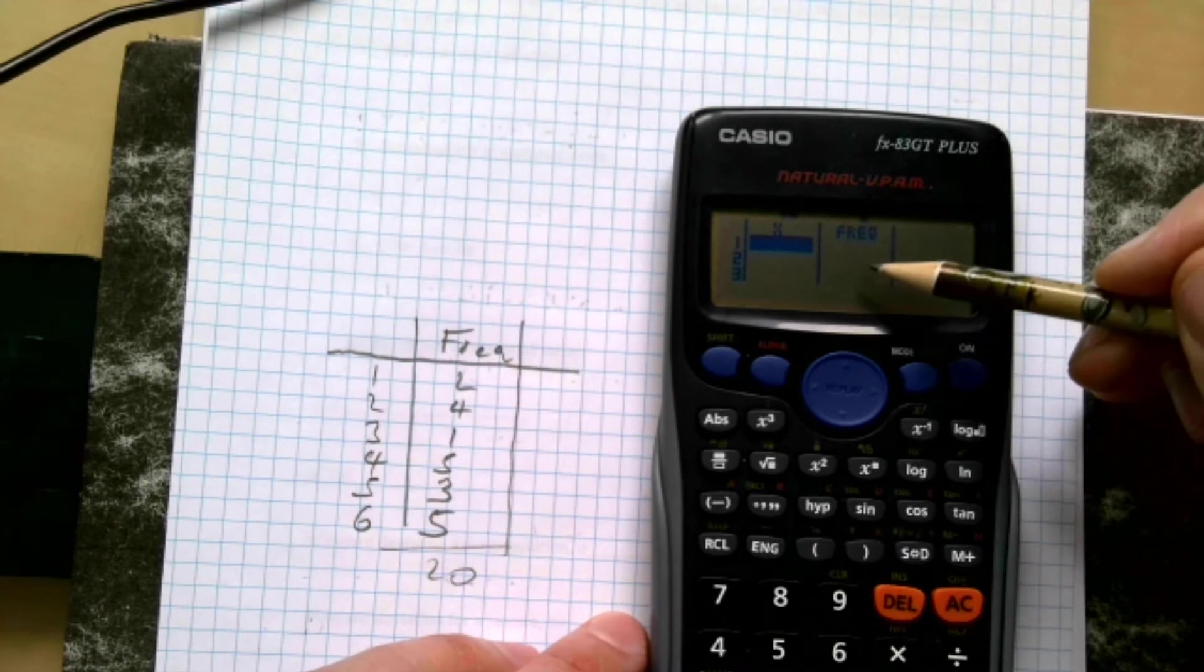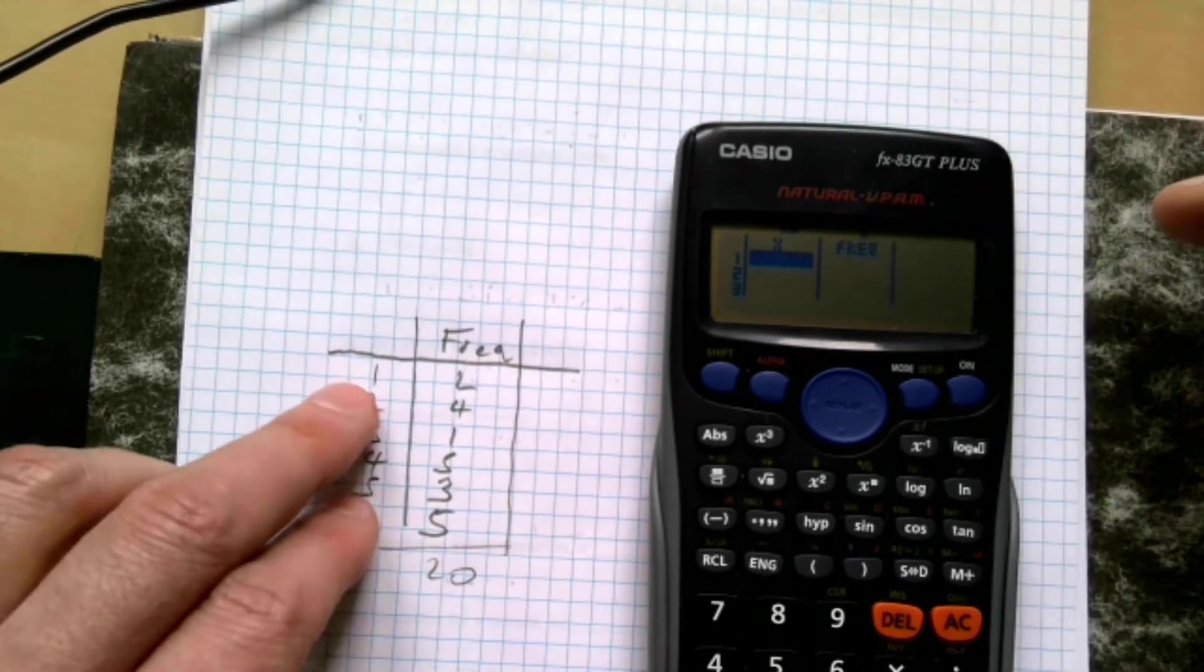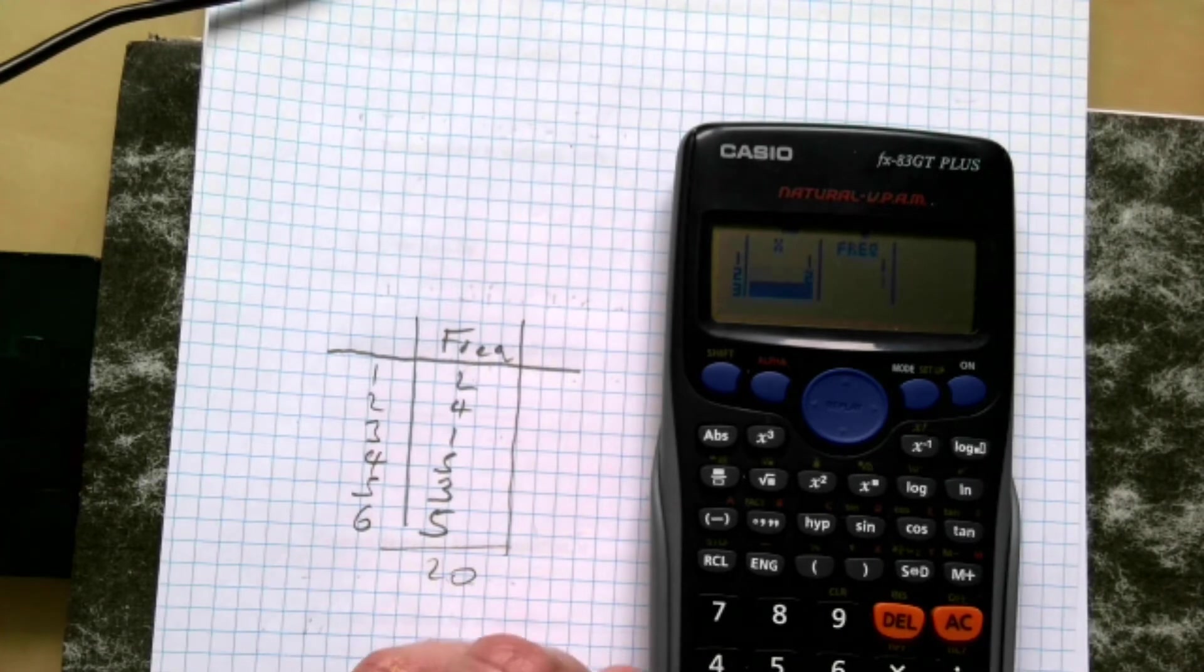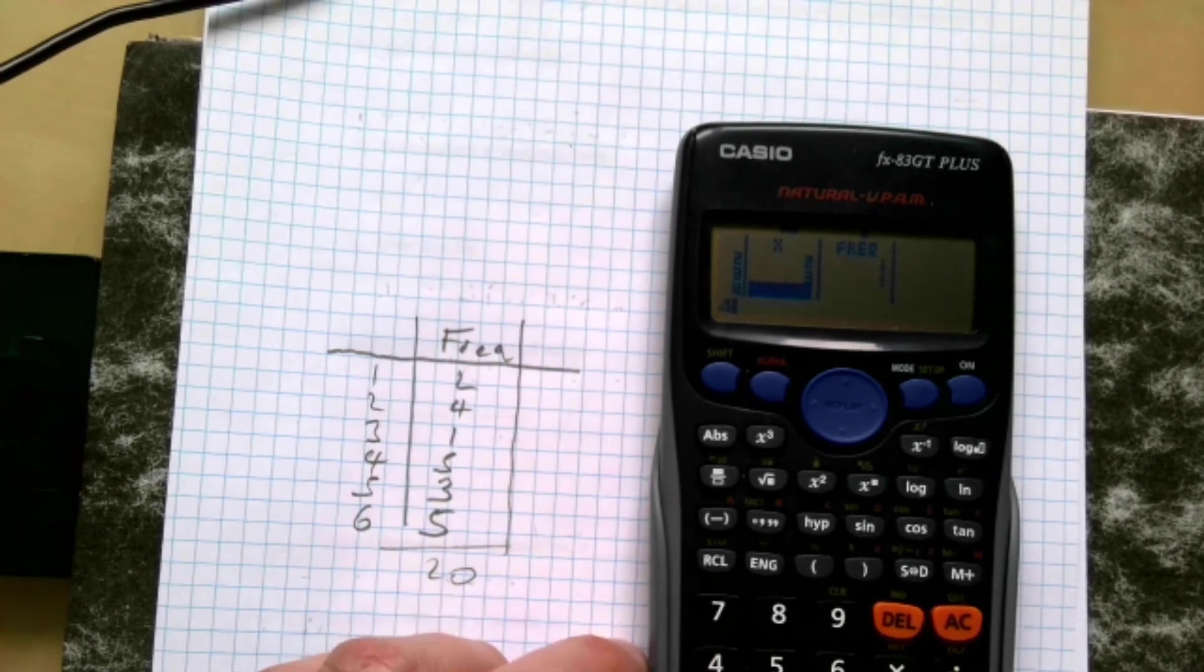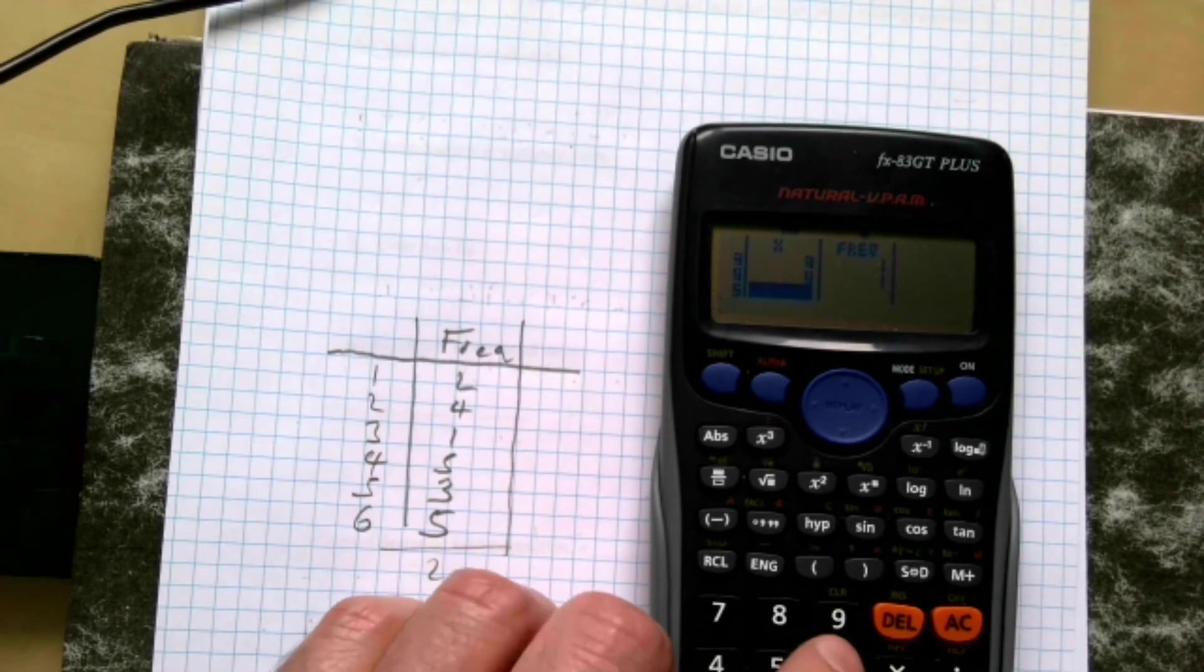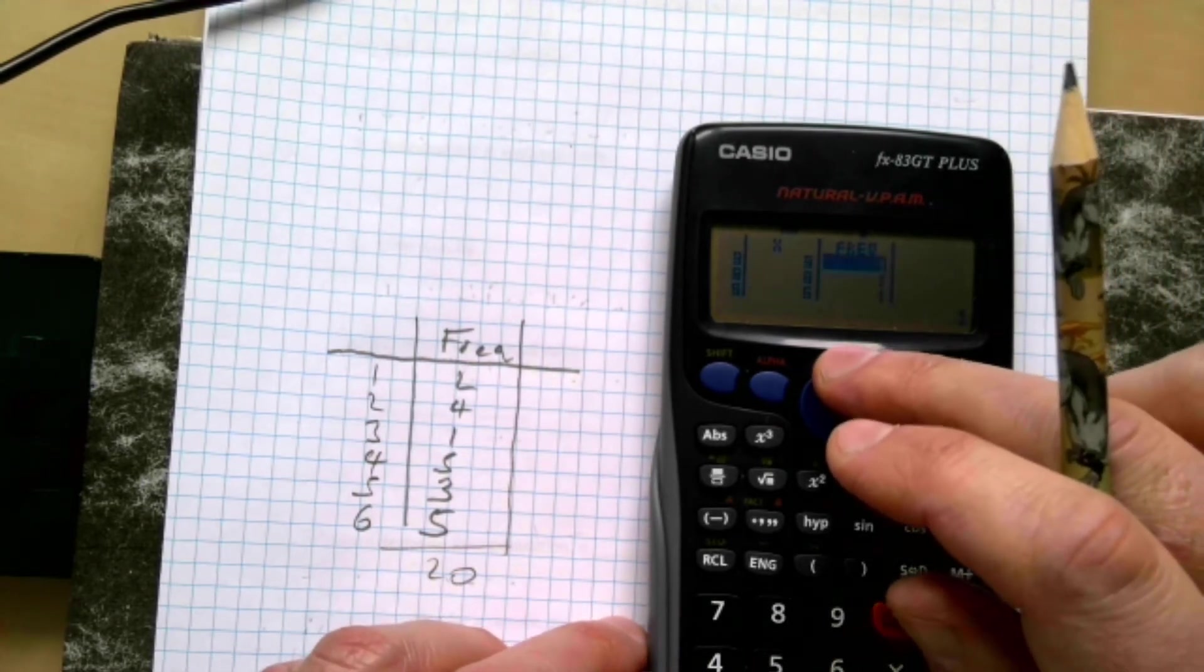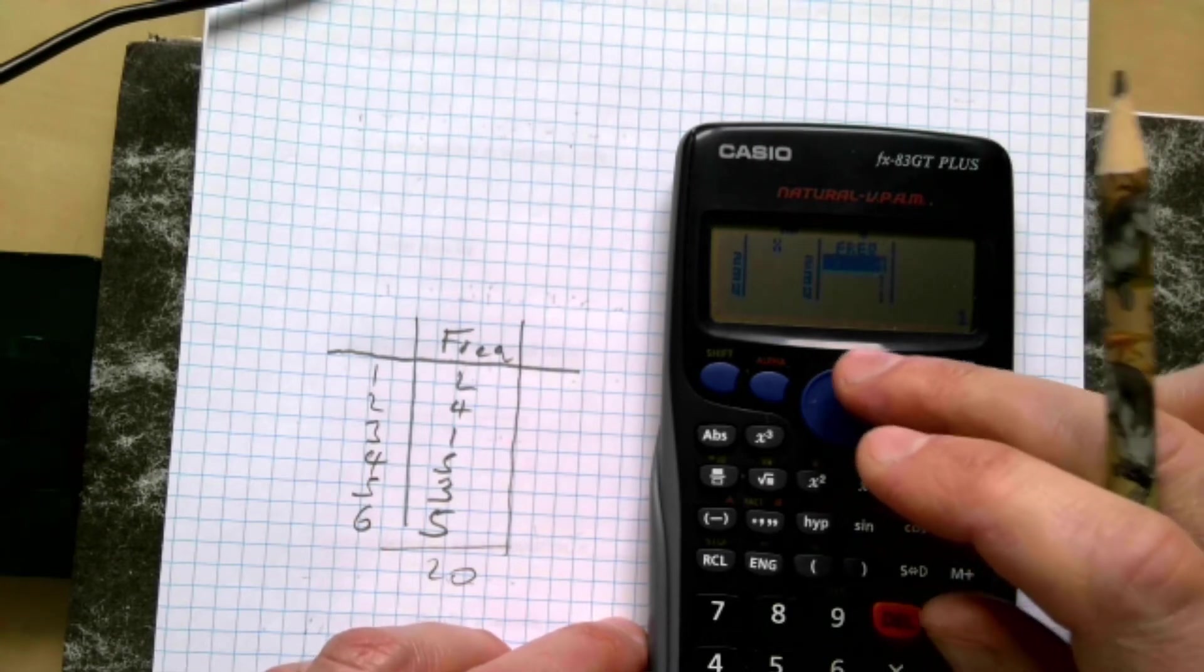So I want one, two, three, four, five, six. So I go one equals, two equals, three equals, four equals, five equals, six equals. And then I'm going to go across and fill in the frequencies that I need for this.